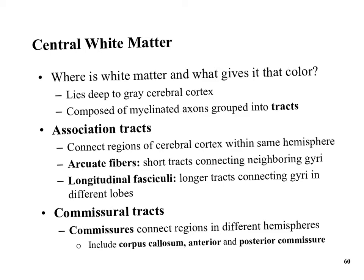Myelinated axons in the brain are grouped together in what we call tracks. We have association tracks that connect regions of the cerebral cortex — they link things together. Arcuate fibers are short tracks connecting neighboring gyri, such as between the sensory cortex in the parietal lobe and the motor cortex in the frontal lobe. Longitudinal fasciculi are longer tracks connecting gyri in different lobes.